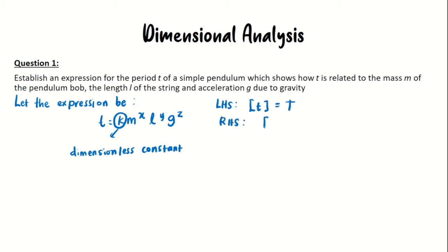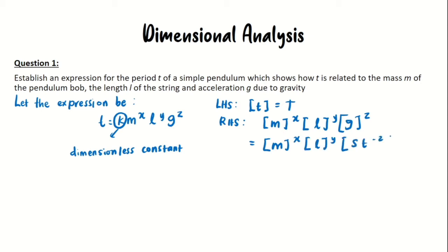Let's solve the left-hand side first, where we have the dimension of T. On the right-hand side we have the dimension of m to the power of x, l to the power of y, and g to the power of z. Since dimension is a method to express a physical quantity in terms of its basic quantities, gravitational acceleration is not yet in basic quantity form, so we need to express it as displacement over time squared.